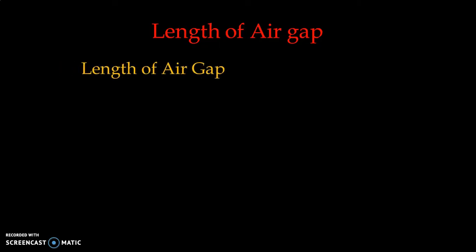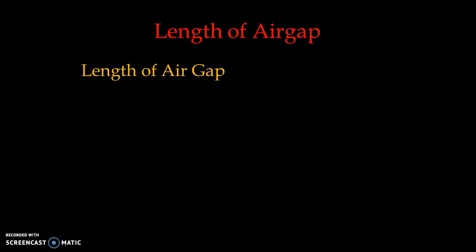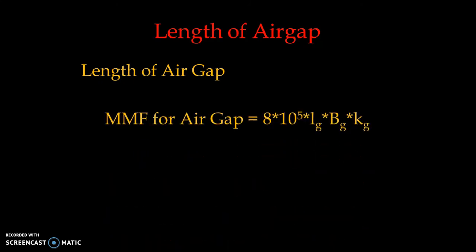We will now discuss how to estimate the length of the air gap. Length of air gap: we have one relationship that is LG/τ, which can normally be taken as 0.02 to 0.025. Based on this ratio, we can easily estimate our length of air gap. But there is another possibility — we can find out a more accurate estimate of the length of the air gap.